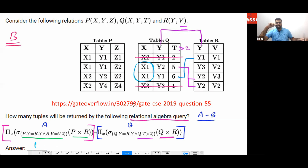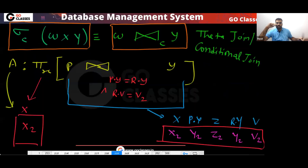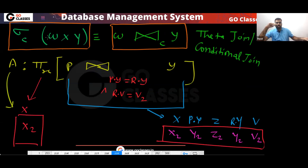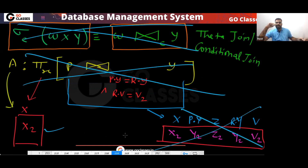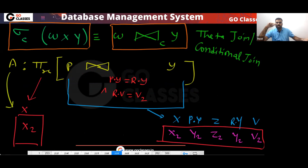In the GATE exam, how will you solve this question? First of all, in the GATE exam, don't write all the intermediate steps. You don't have to create all the cross product tables. Just directly look at the table and write only the final result. Save time. In the GATE exam, your focus should be only on getting the answer. From the tables, just get your answer — that's it.